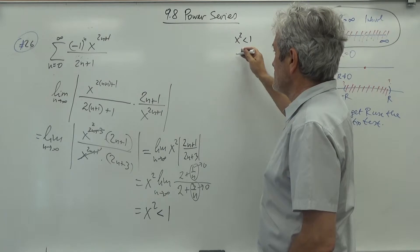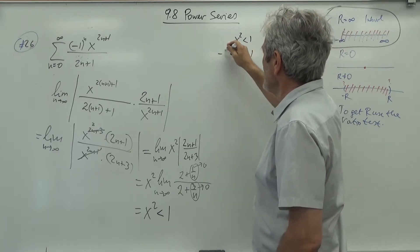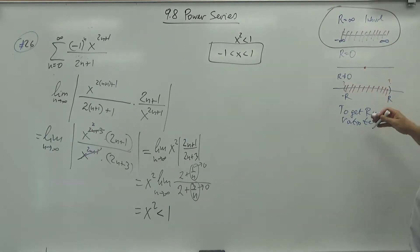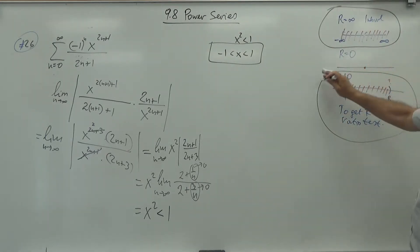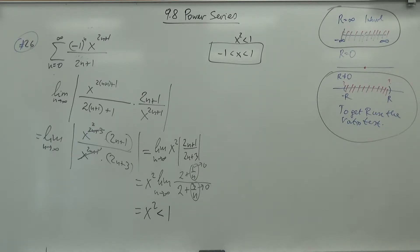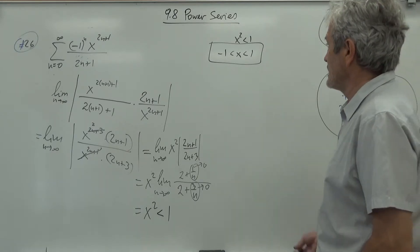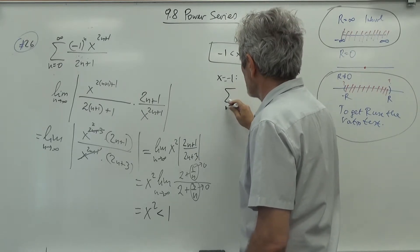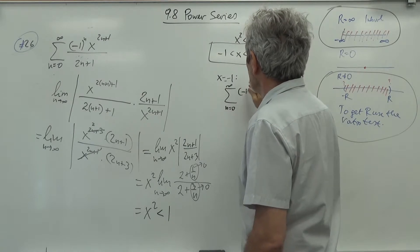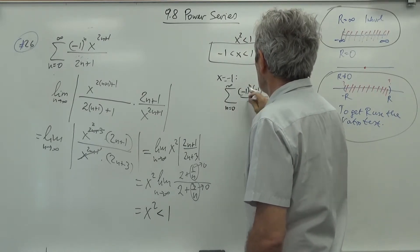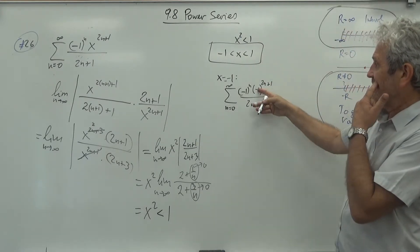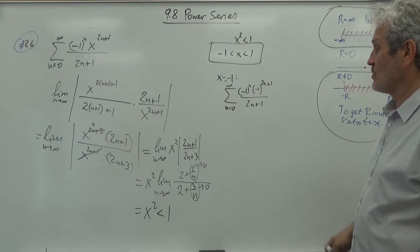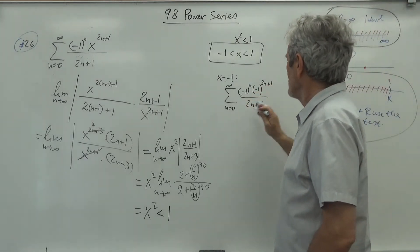We now have the open interval (-1, 1) from the ratio test, but we must check the endpoints separately. When x equals -1, we get the sum from n=0 to infinity of (-1)^n times (-1)^(2n+1) over (2n+1). Since 2n+1 is always odd, (-1)^(2n+1) equals -1, so we get the sum of (-1)^(n+1) over (2n+1).